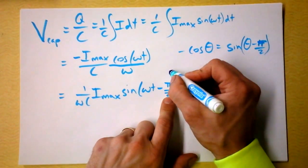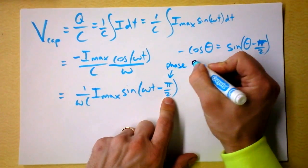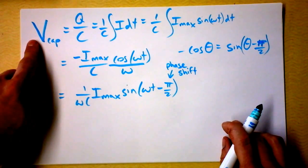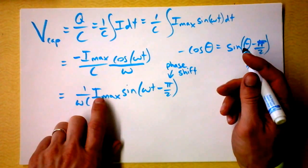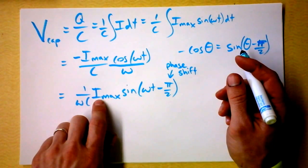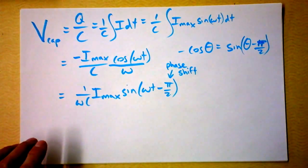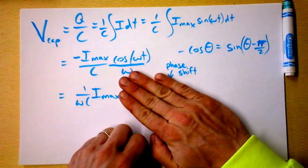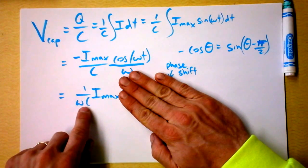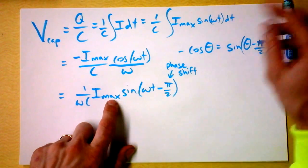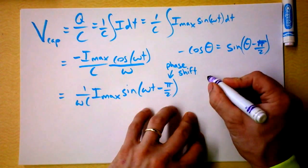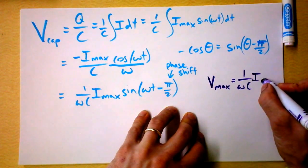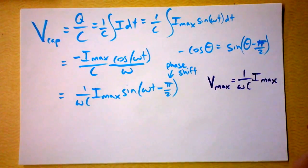We can identify some maximum values: when the sine function is at a maximum, it equals 1, so V-cap equals (1 over omega C) times I-max. So V-max equals (1 over omega C) times I-max. This is a key observation.